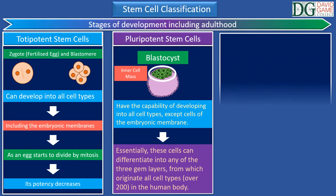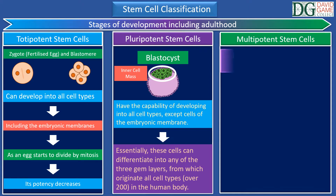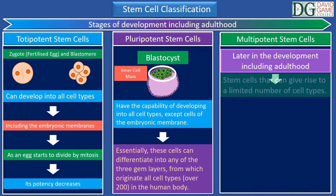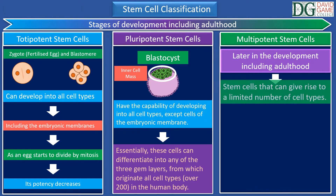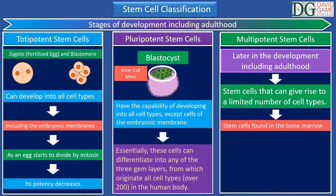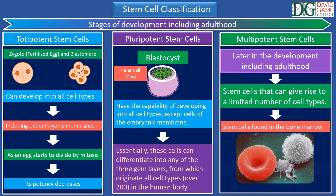Multipotent cells are present later in development, including adulthood, and can give rise to a limited number of cell types. For example, somatic stem cells found in the bone marrow can give rise to red and white blood cells.